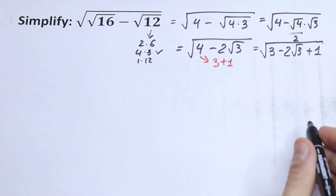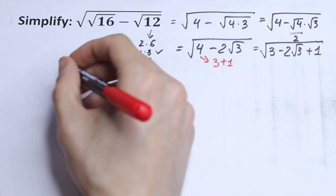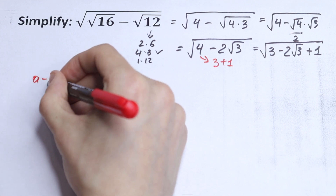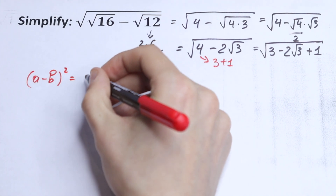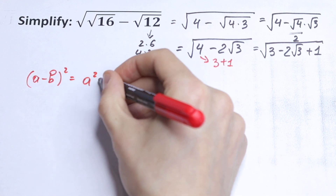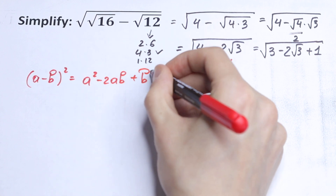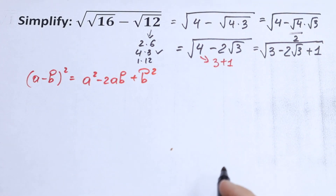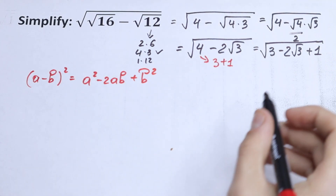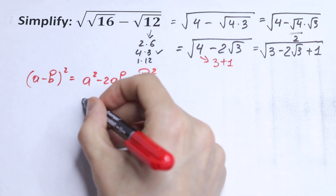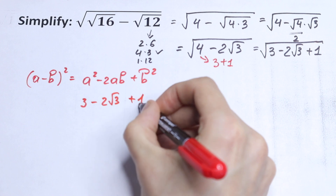What are we going to do next? We know the formula (a minus b) squared, which equals a squared minus 2ab plus b squared. Let's write our expression under this formula. We have 3 minus 2 times the square root of 3, plus 1.